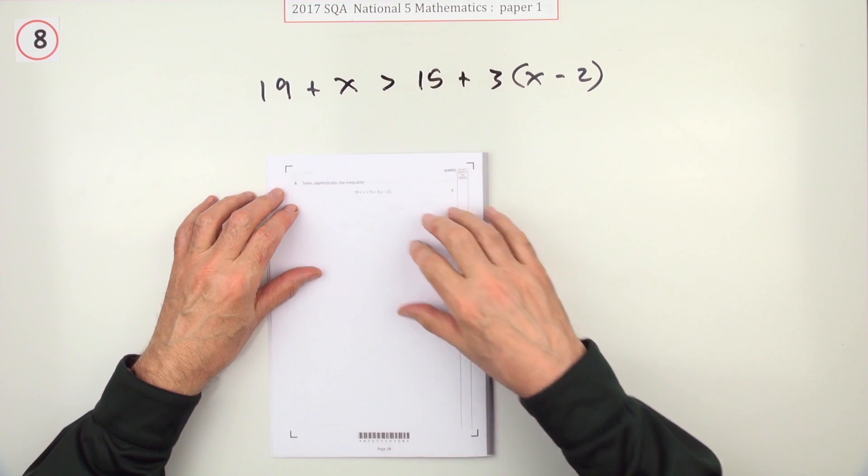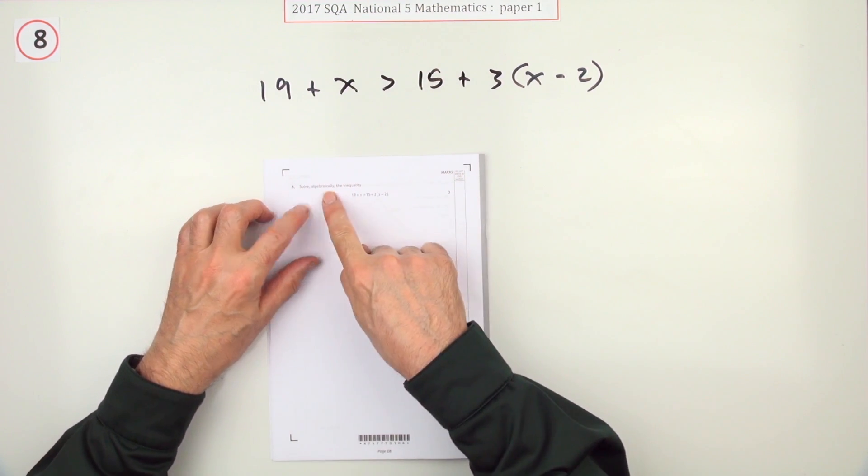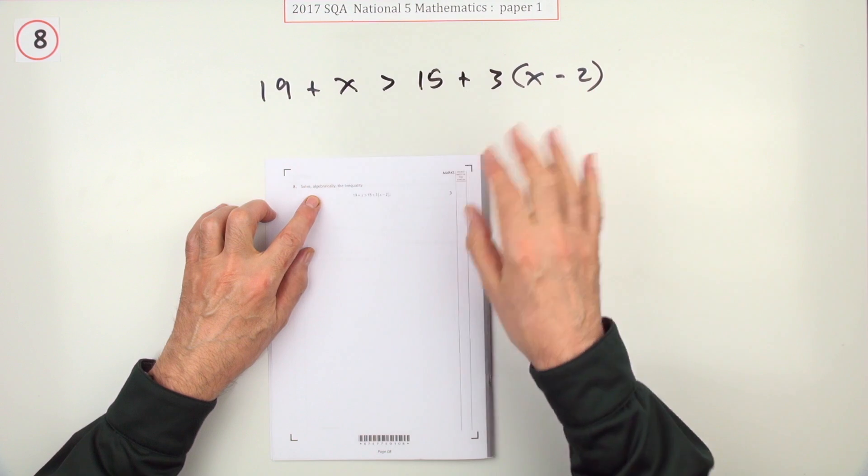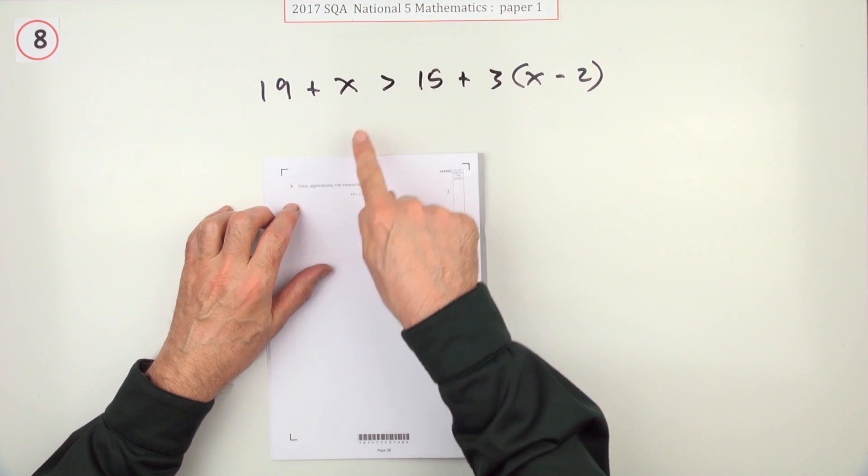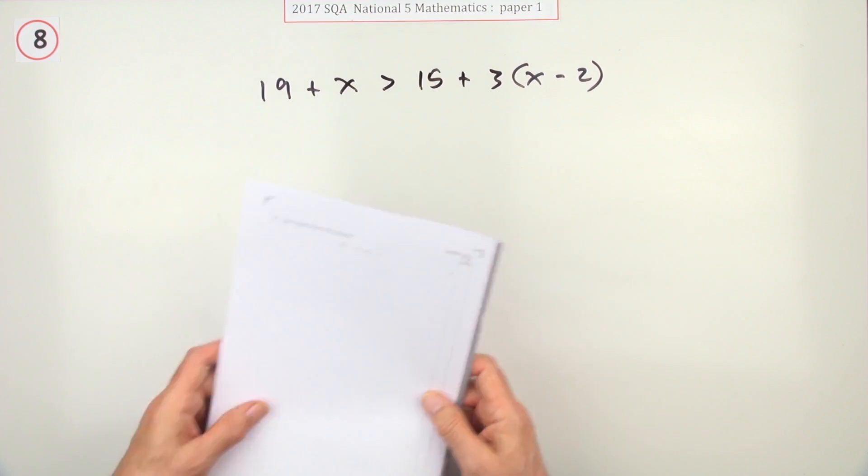Number 8 from the National 5 in 2017. Paper 1. Solve algebraically. So don't just try numbers to see which ones work. Solve algebraically this inequality. It's not an equation. It's an inequality for 3 marks.